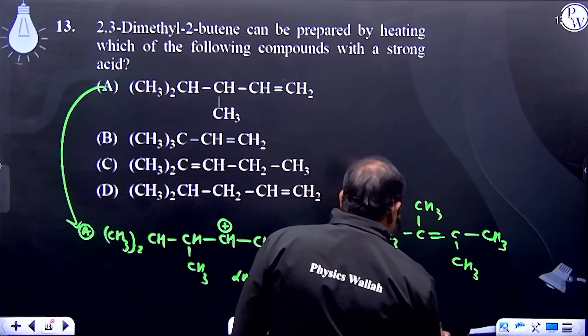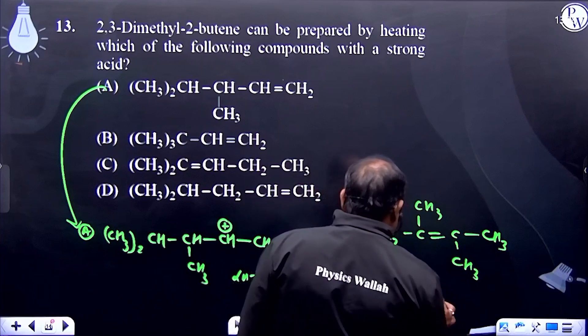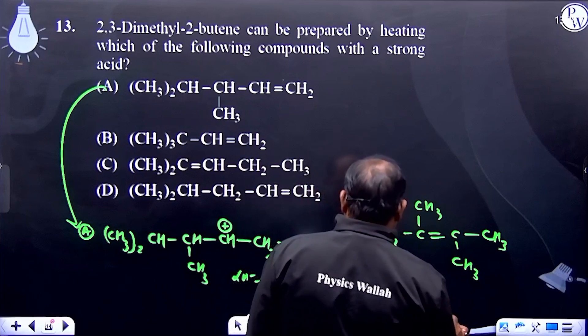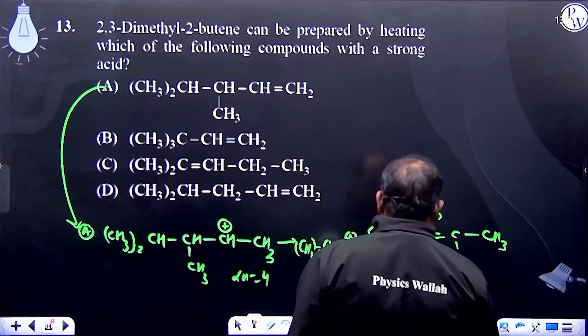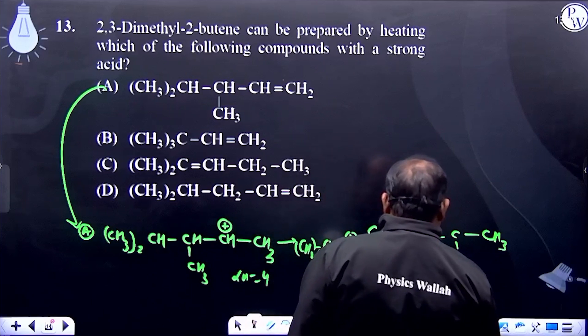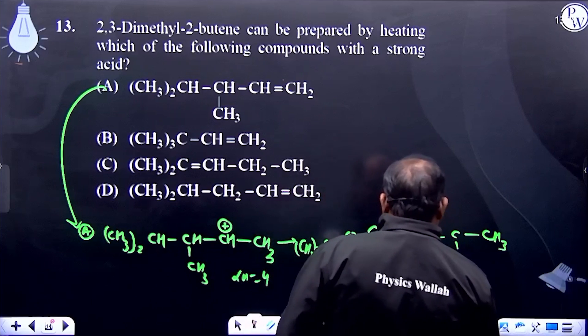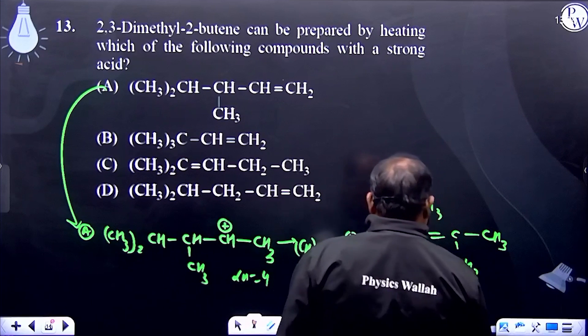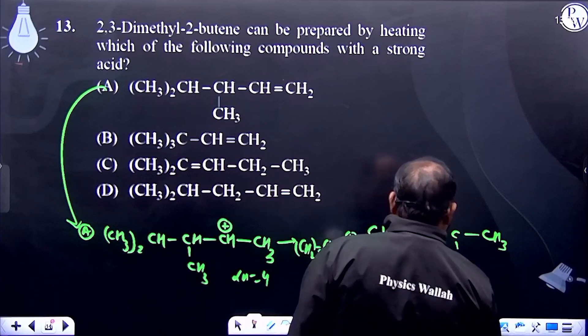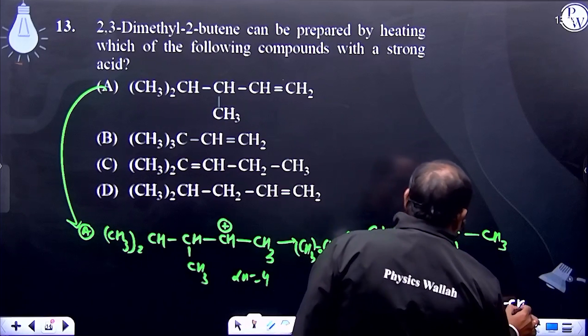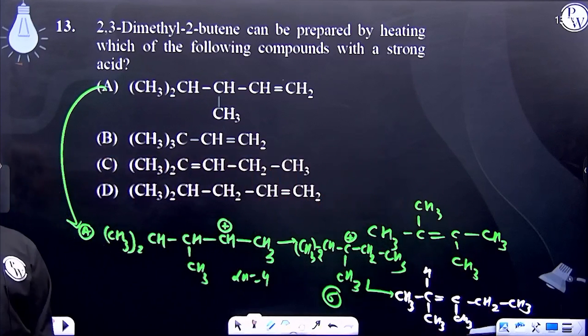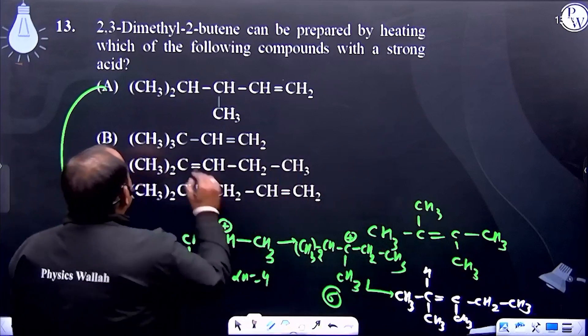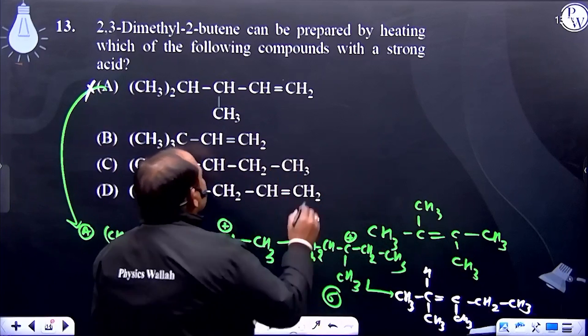The product would have CH3 groups and a double bond with CH2CH3. This is not 2,3-dimethylbutene, so option A is discarded.